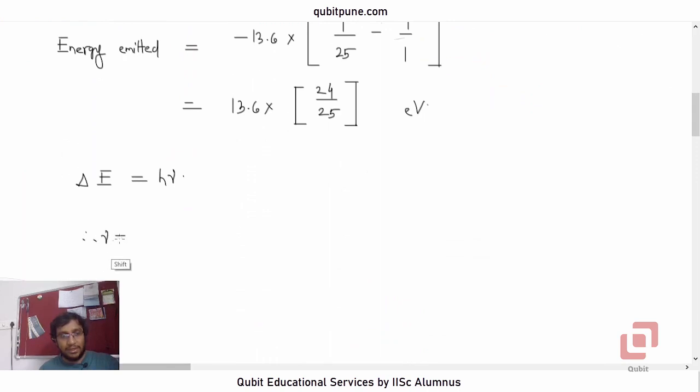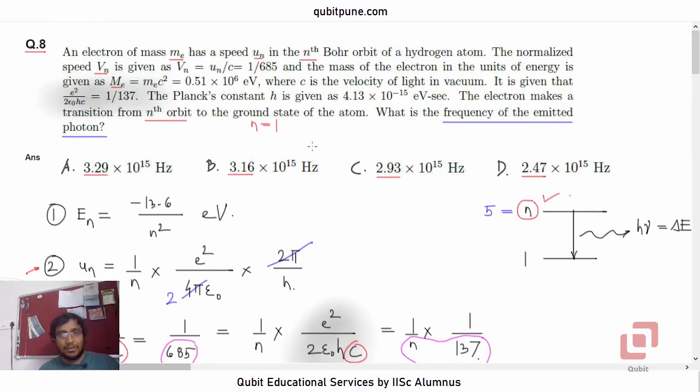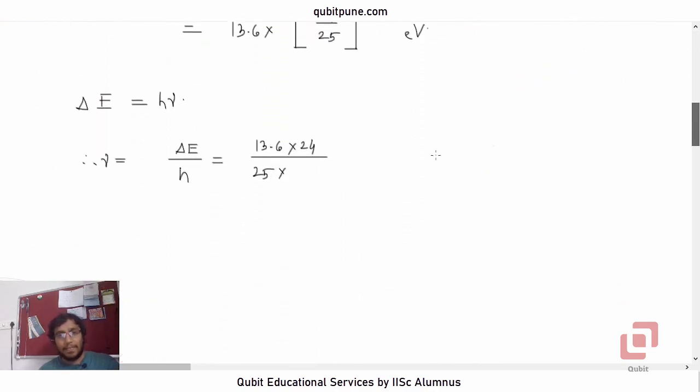So what is nu? The frequency that we want to calculate. The frequency will be delta E upon h. Now what is delta E? It is 13.6 into 24 upon 25 into, now we need to multiply the denominator by the value of the Planck's constant, 4.13 into 10 raised to negative 15 electron volt second. There is absolutely no need to worry about the units. Because delta E is already measured in electron volt, so electron volt upon electron volt second, we are going to get per second, and that is basically hertz.